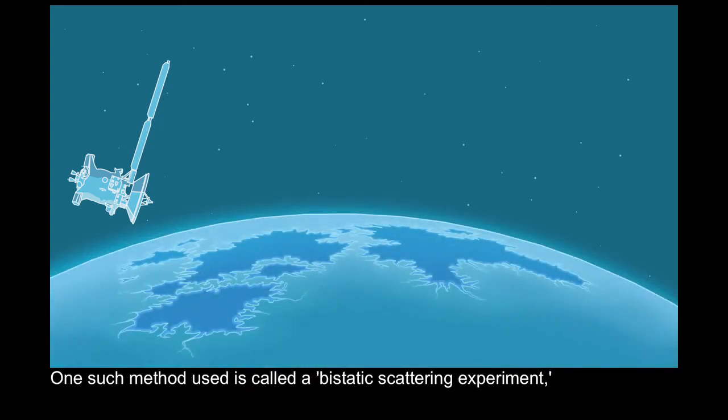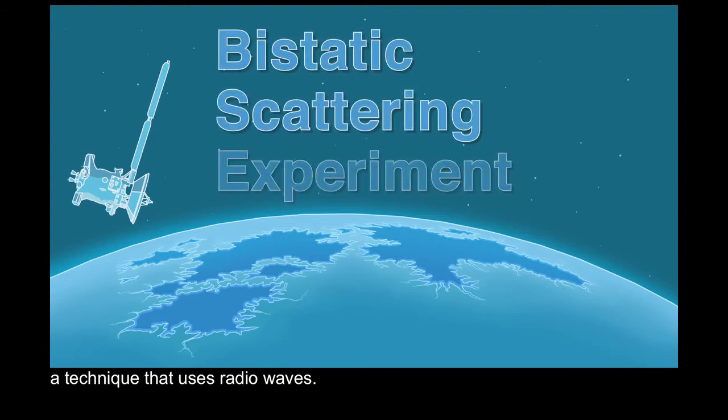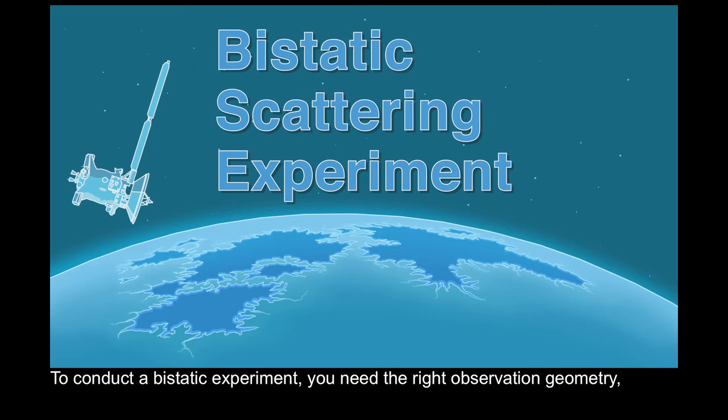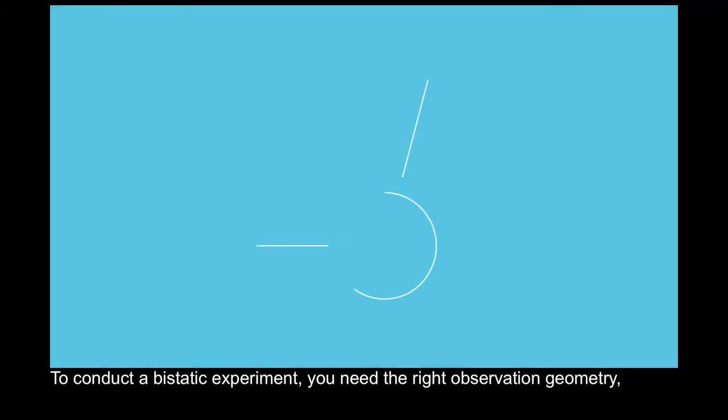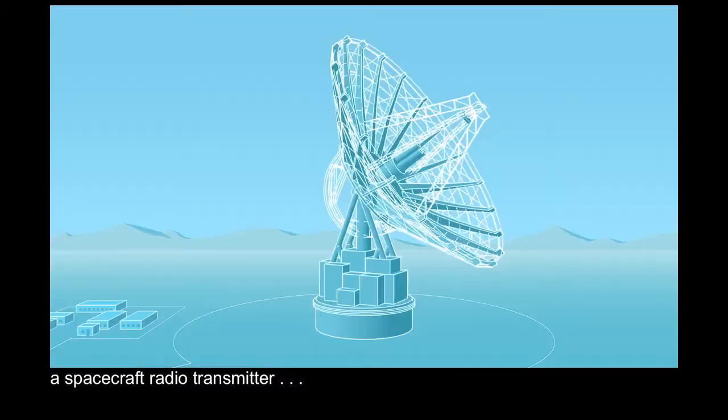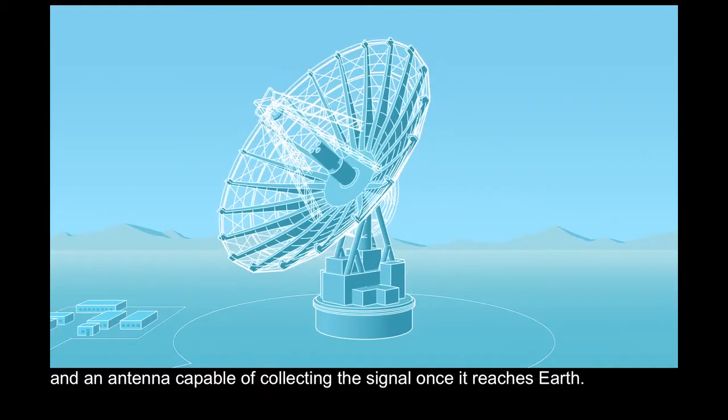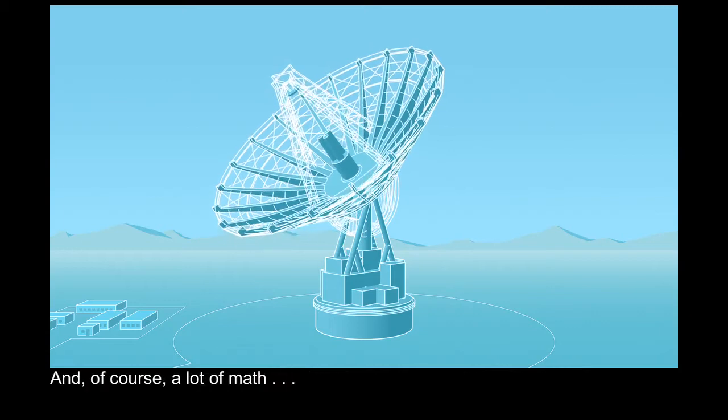One such method used is called a bistatic scattering experiment, a technique that uses radio waves. To conduct a bistatic experiment, you need the right observation geometry, a spacecraft radio transmitter, and an antenna capable of collecting the signal once it reaches Earth.